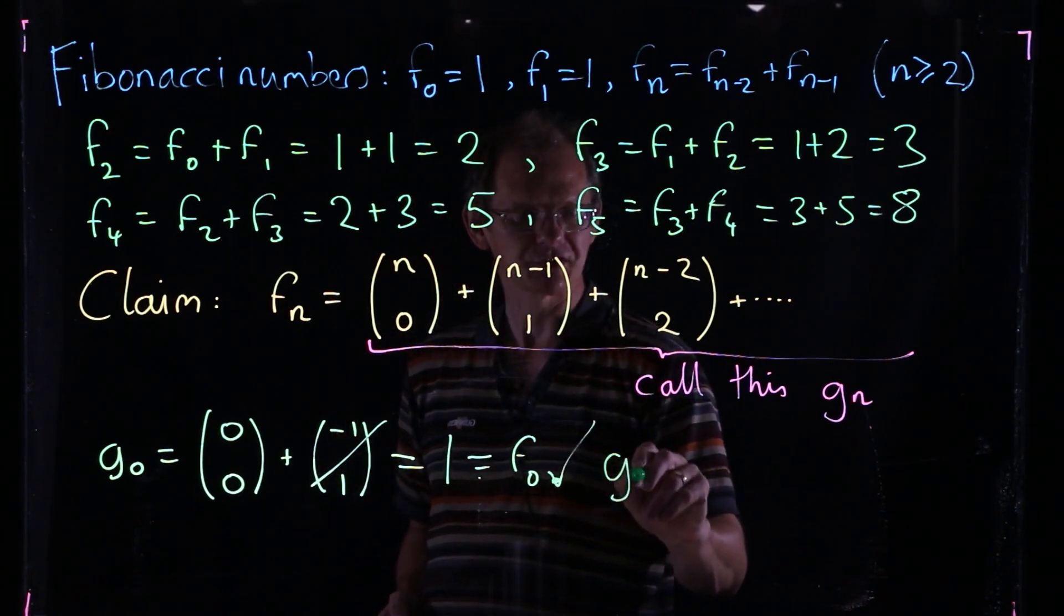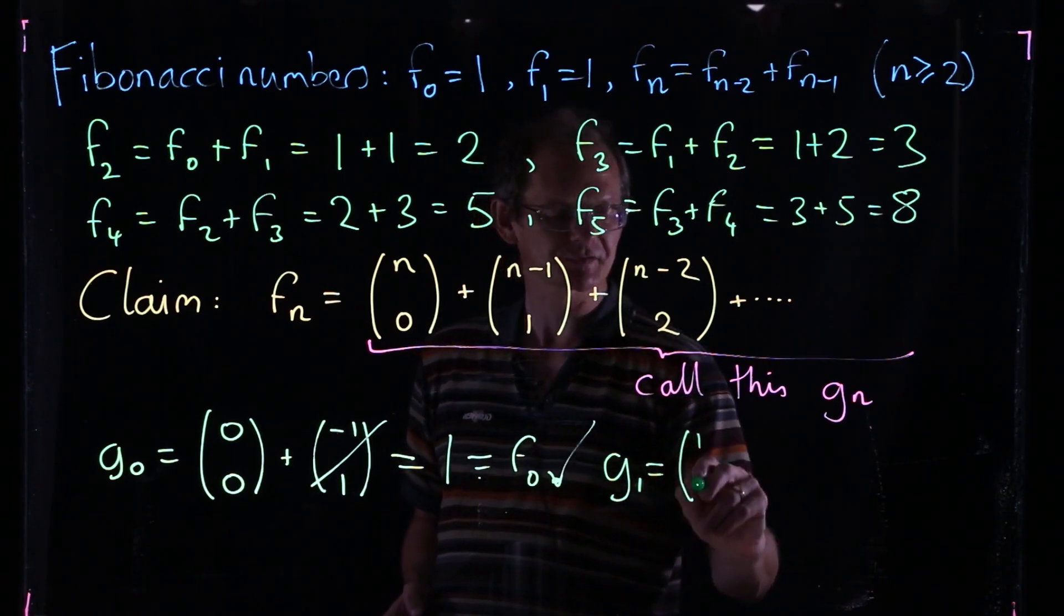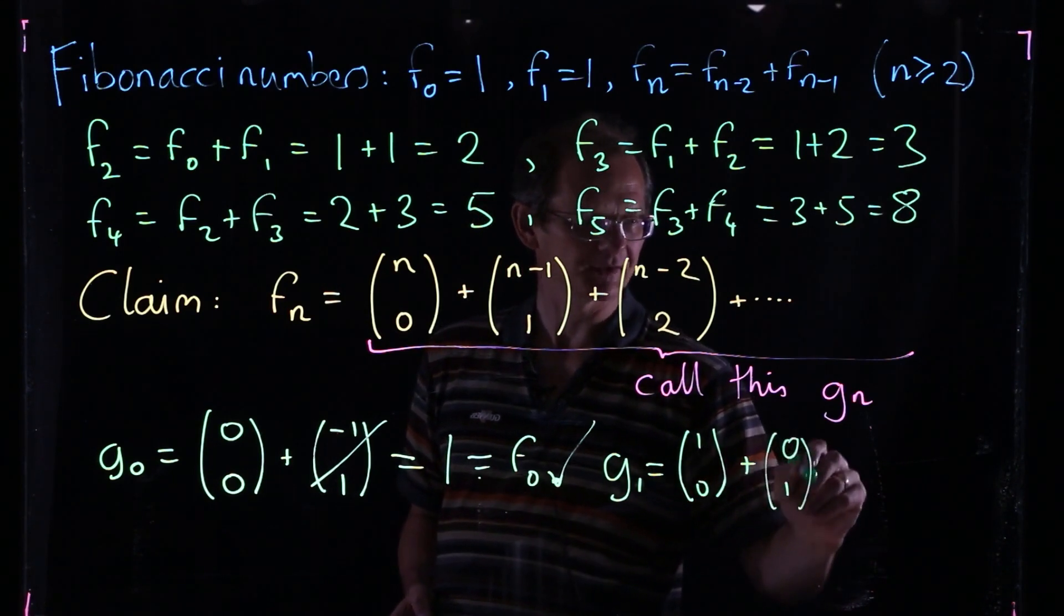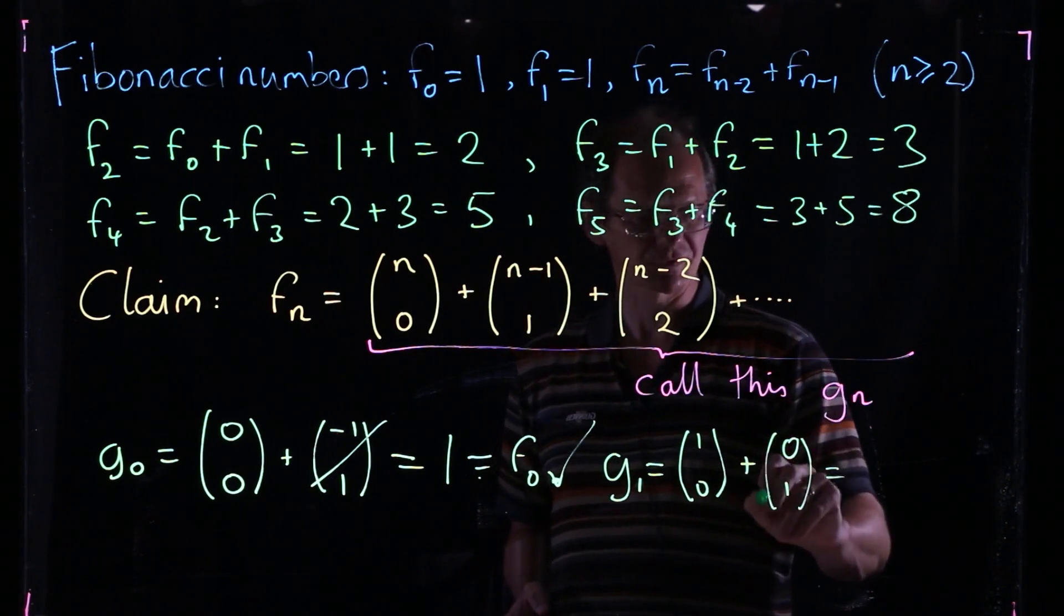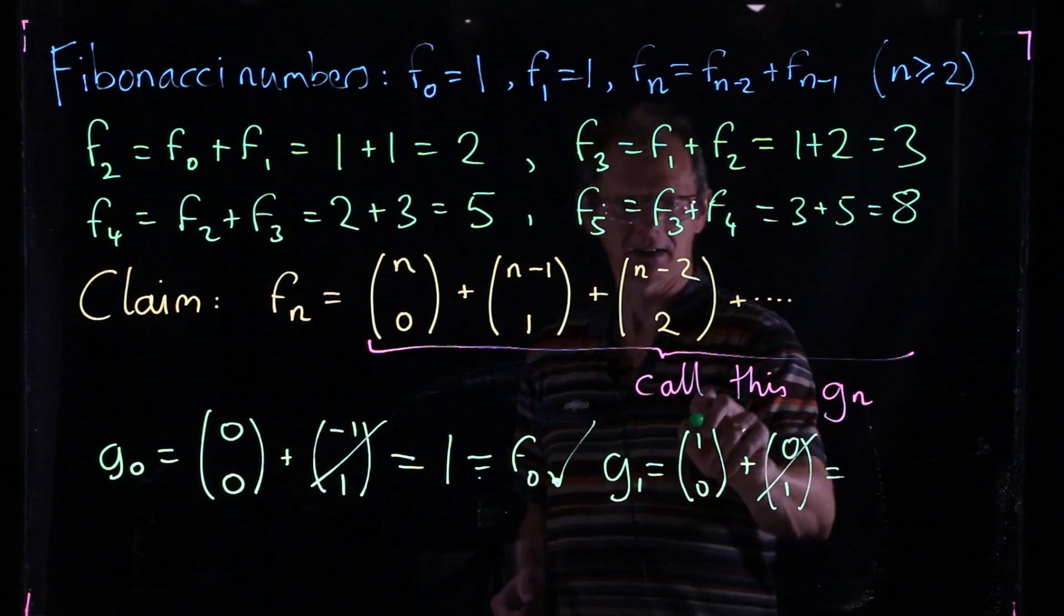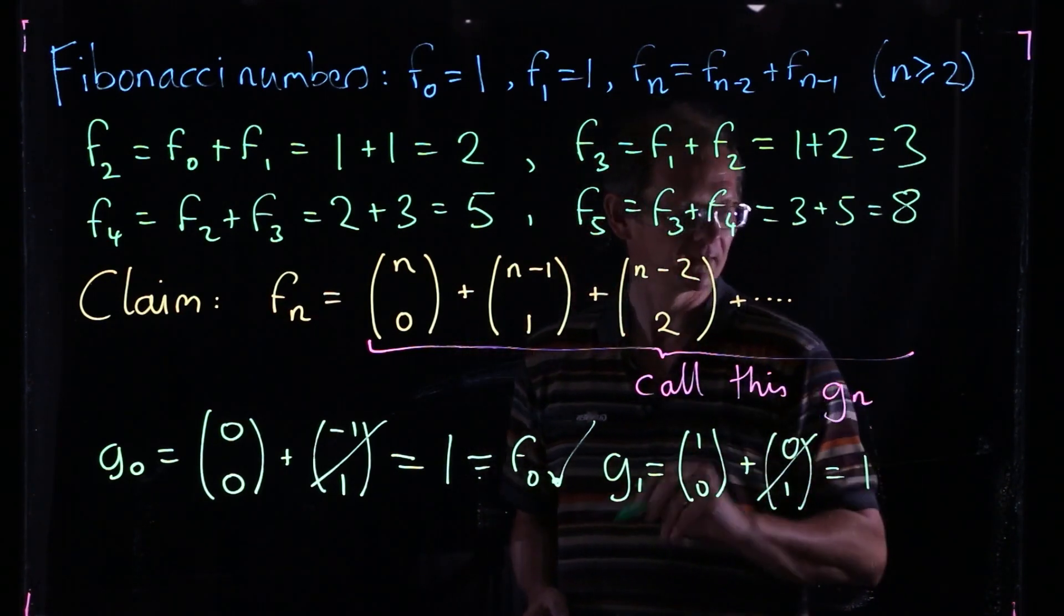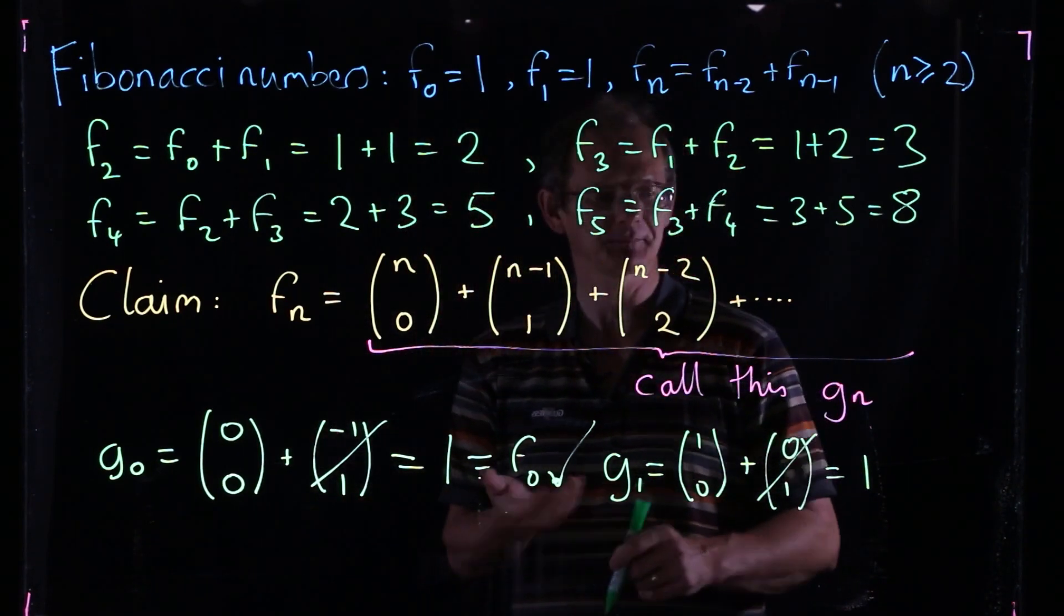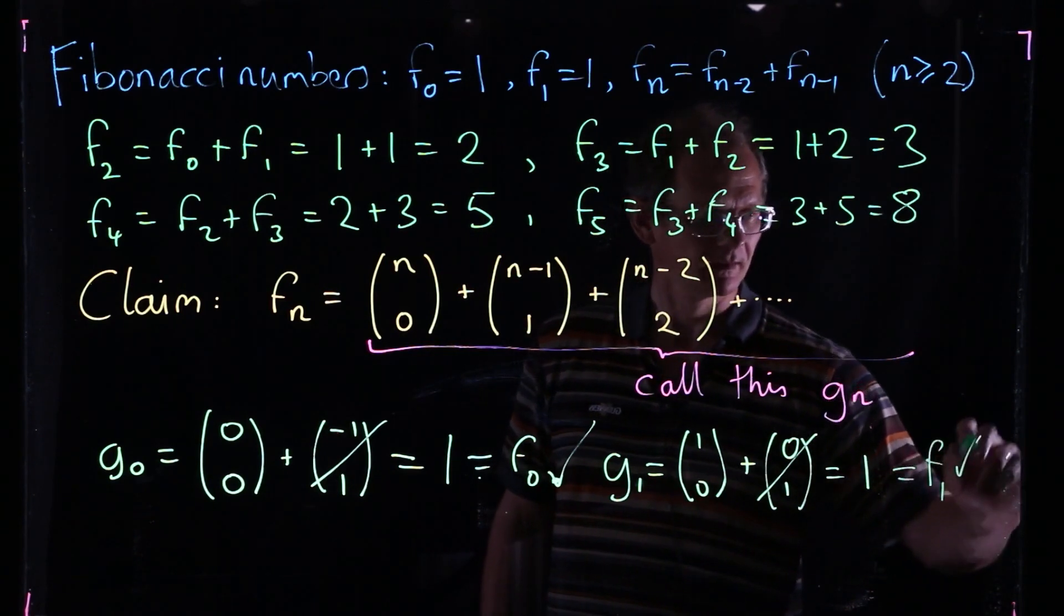And then what about G1? So that's 1 choose 0, 0 choose 1, and so on. Again, 0 choose 1 because you've got more on the bottom than the top, that's just 0. So you've just got this 1 choose 0. 1 choose 0 is equal to 1, the number of ways of choosing 0 things from one thing, which is 1. And that's the same as F1, so we're in good shape.